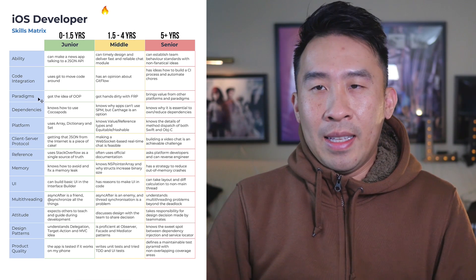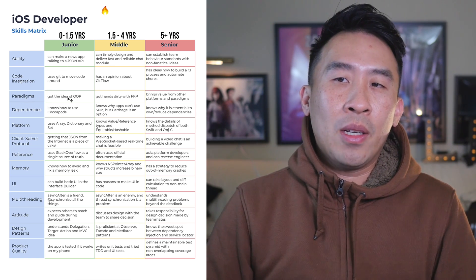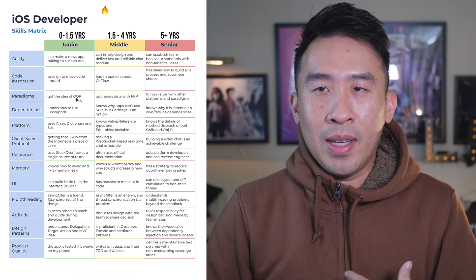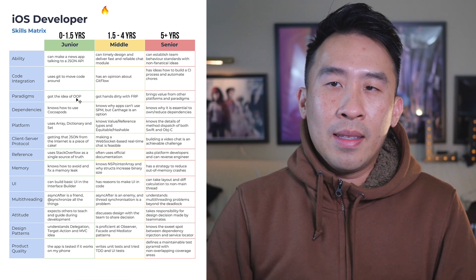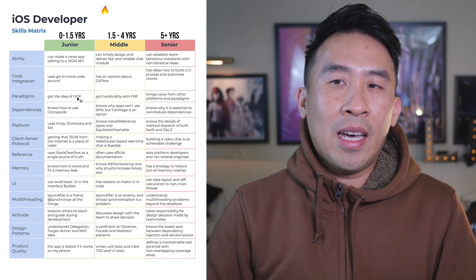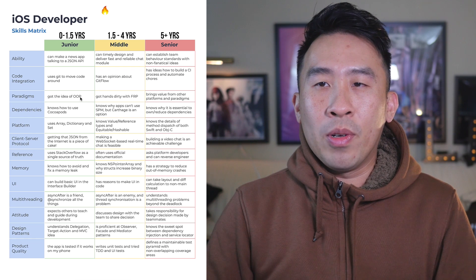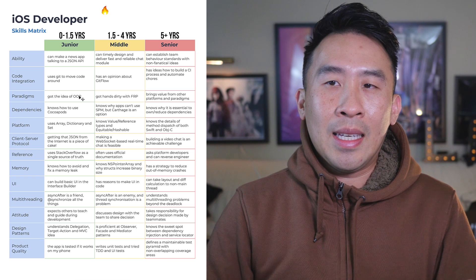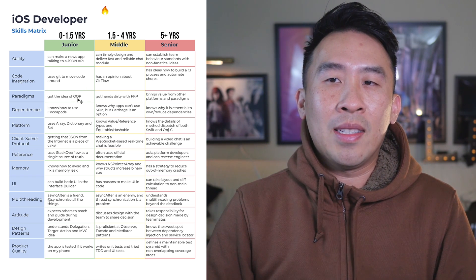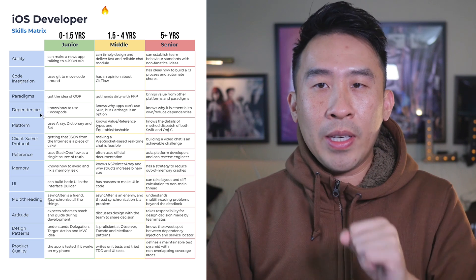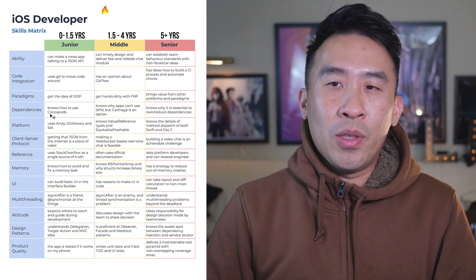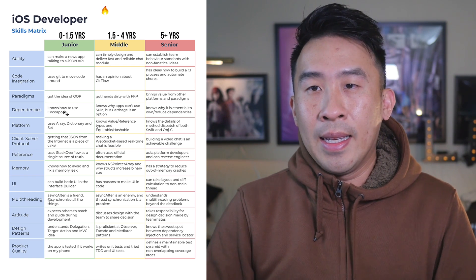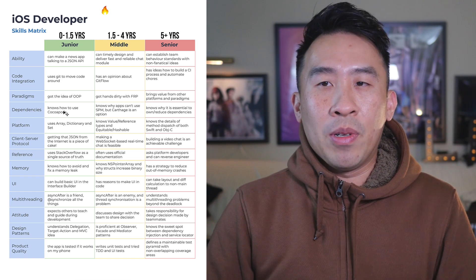For paradigms, a junior developer should have an idea of object-oriented programming. This is a pretty abstract topic — I wouldn't be surprised if someone I hire as a junior developer doesn't fully understand OOP yet. As they gain more experience with different libraries, OOP starts to sink in and they build a better foundation. For dependencies, a junior developer should know how to use CocoaPods, which is pretty obvious since almost all projects rely on CocoaPods and the libraries available.